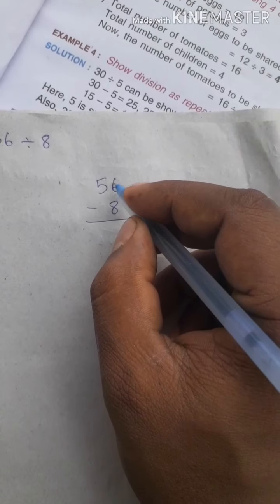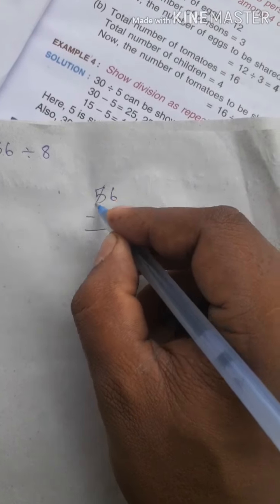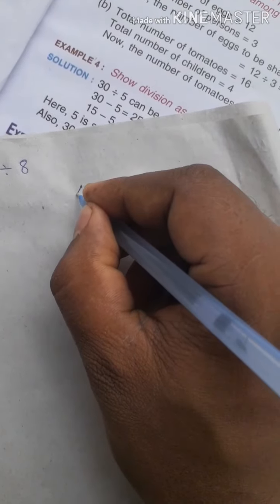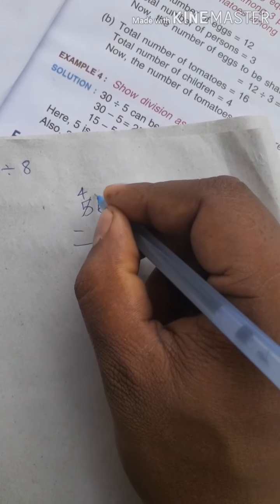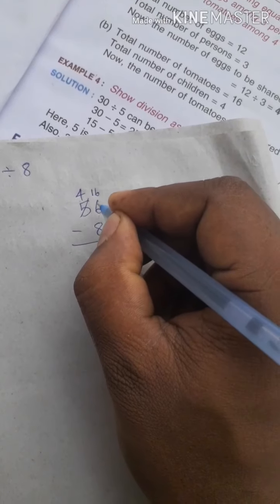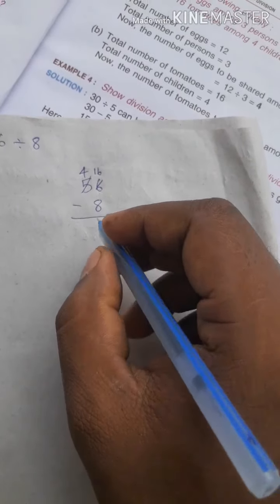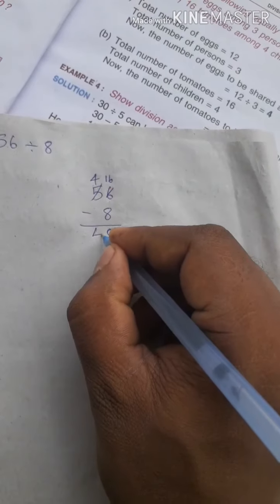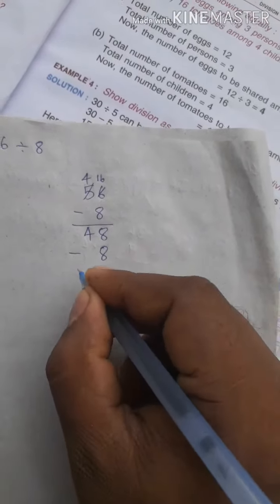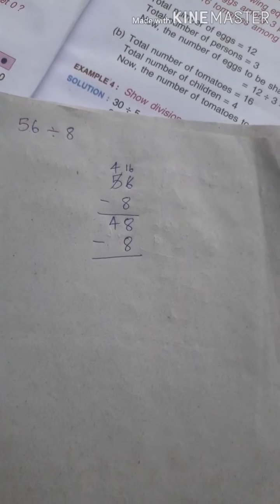If you subtract you will get - you know that you cannot subtract 8 from 6. So let us cut and take 1 from this number. This number will become 4. And this number will become 16. What is 16 minus 8? Is 8. Then 4 here down.